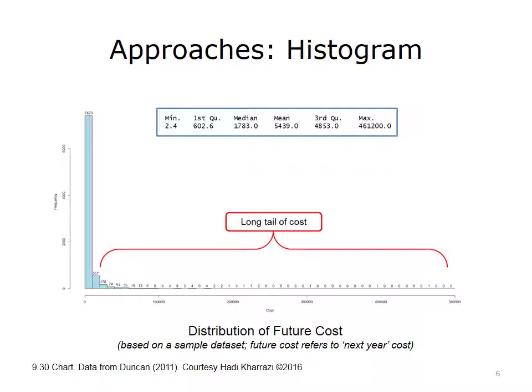A simple approach to visualize population health data is to construct a histogram of each of the variables. For example, if cost is the outcome variable, a histogram can quickly inform the analyst that cost is not normally distributed in the population. This histogram shows the distribution of cost in a large insurance claims database. As evident by the histogram's first bar on the left, a large denominator of the population has minimal cost. The histogram also shows that there are fewer and fewer patients as the cost increases. Indeed, there are only a handful of patients with an annual cost higher than $100,000. A summary statistic included on the top of the histogram shows that the cost data is highly skewed and has a very long tail. This extreme skewness makes the distribution of the data incompatible with the requirements of common predictive methods, such as linear regression models.